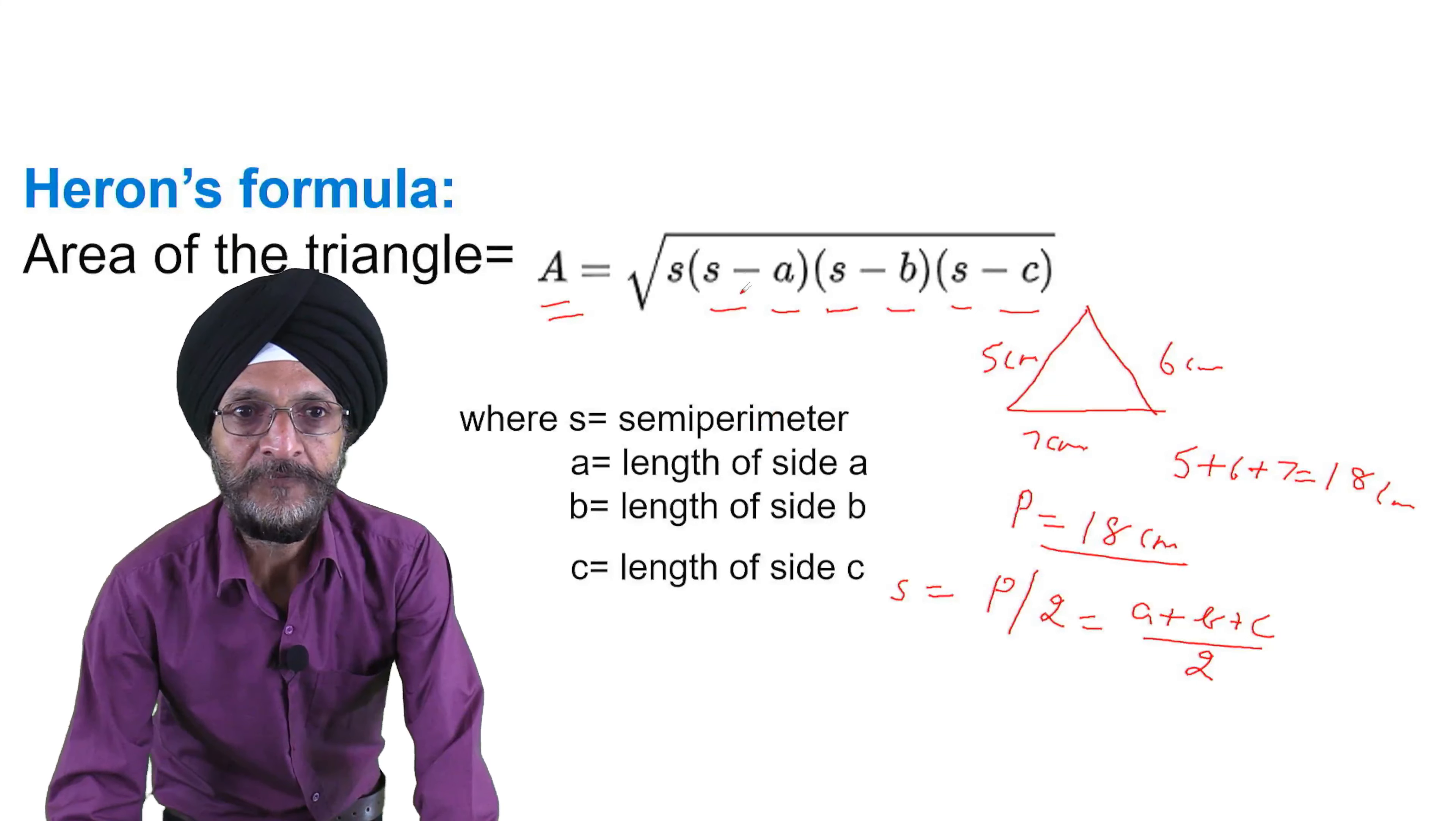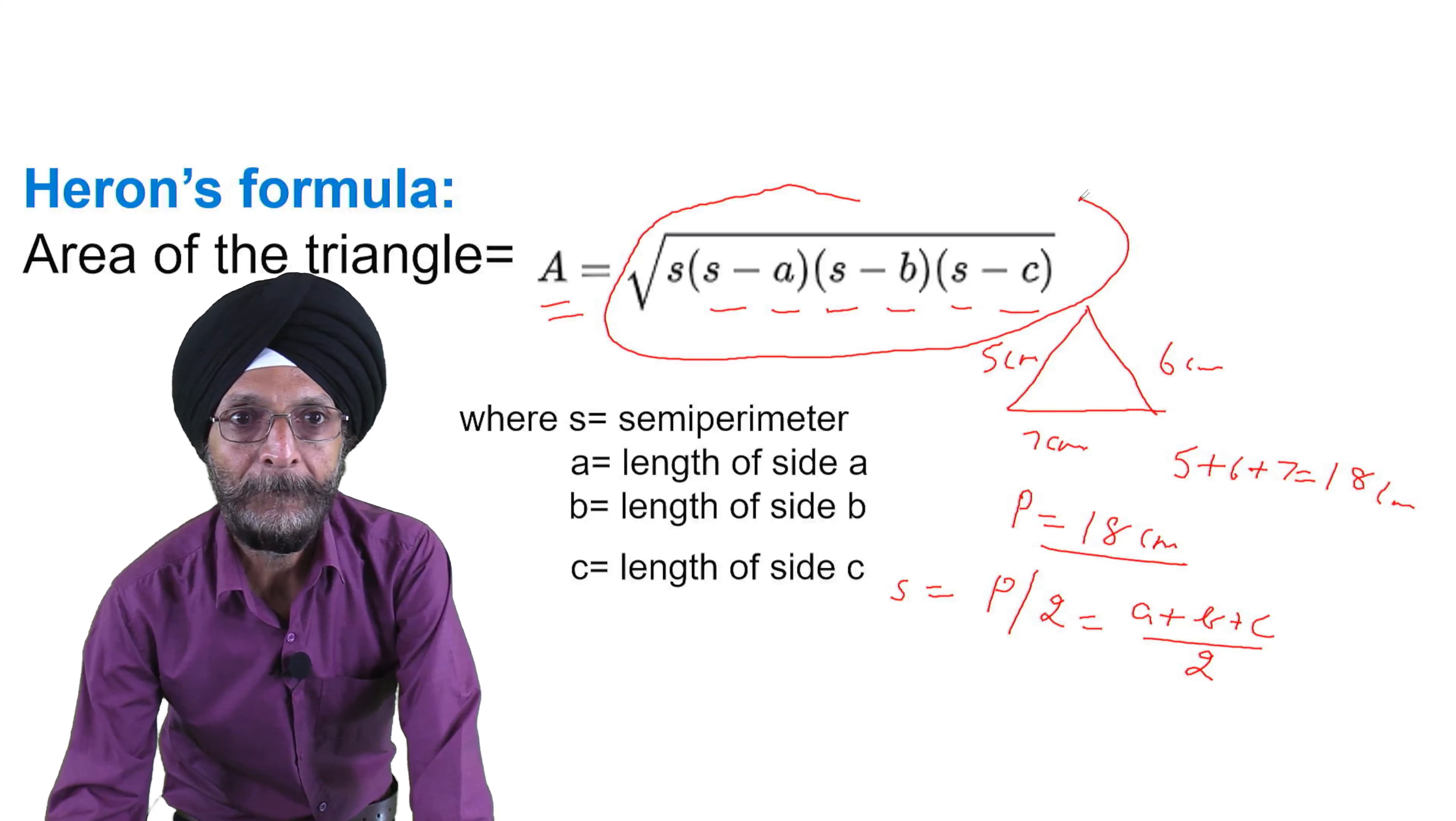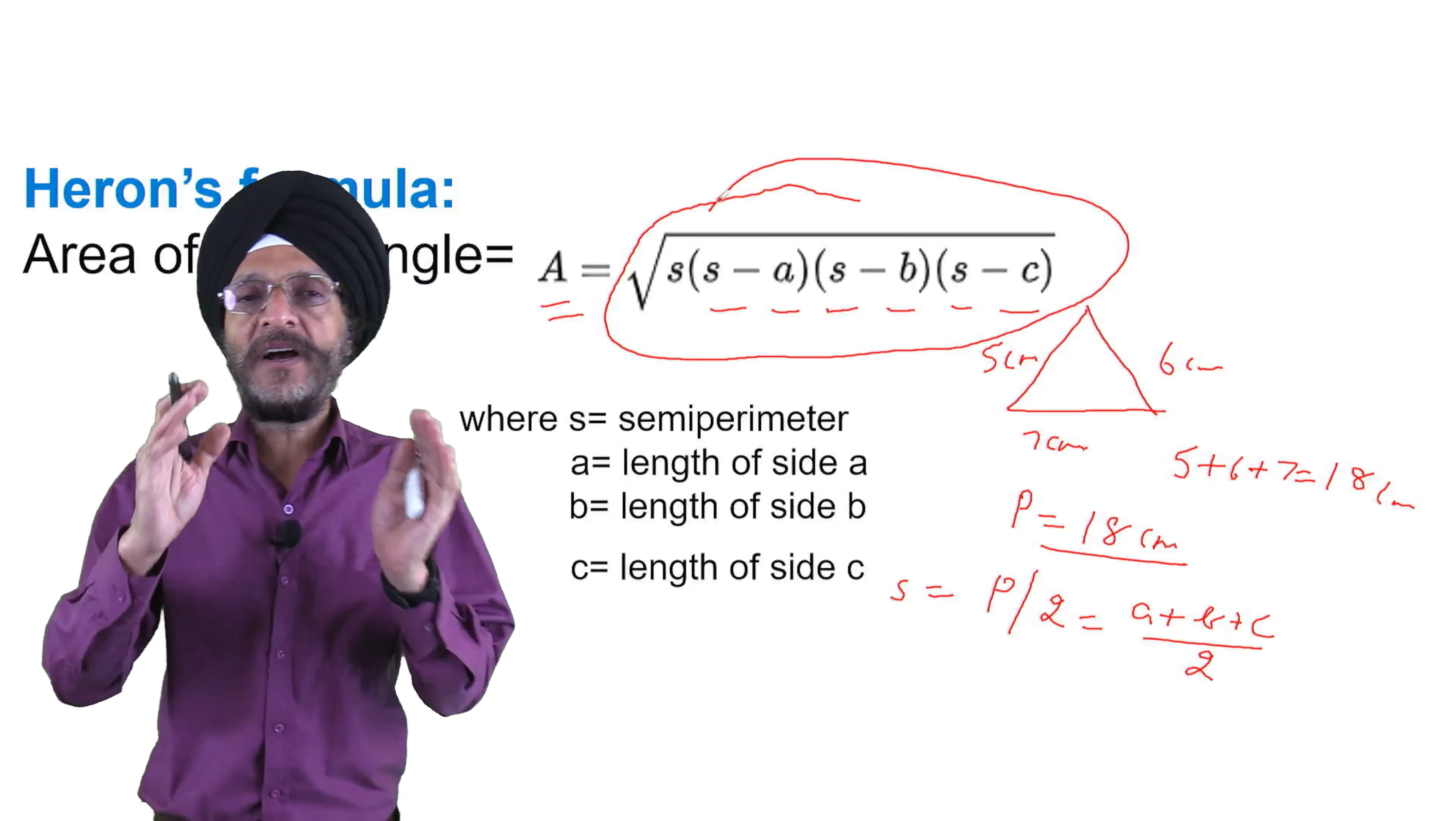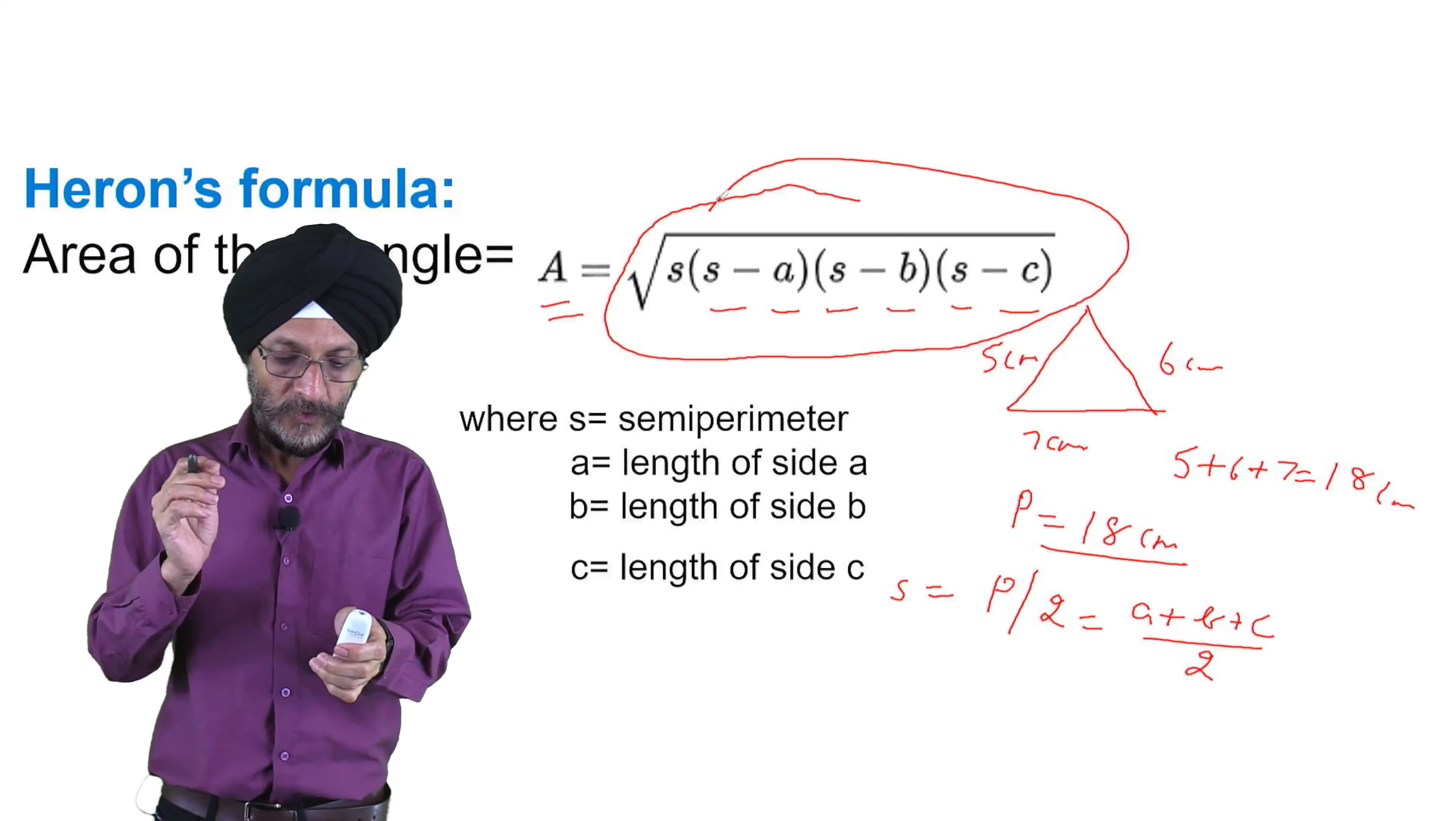So our whole course is to rotate around this formula, Heron's formula. You have to use this formula when all the three sides of the triangle have been given to us.